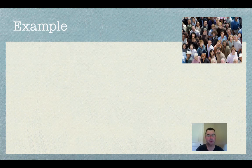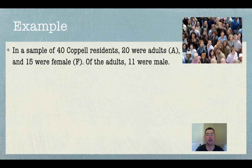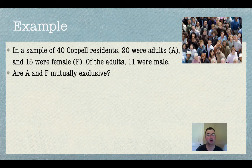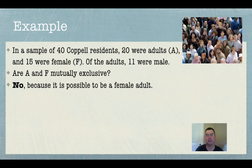Okay, so let's talk about an example. In a sample of 40 Coppell residents, 20 were adults (A), and 15 were female (F). Of the adults, 11 were male, which means that the other 9 were female. So are those two mutually exclusive, being an adult and being female? Well, no, because it's possible to be both. It's possible to be a female adult.